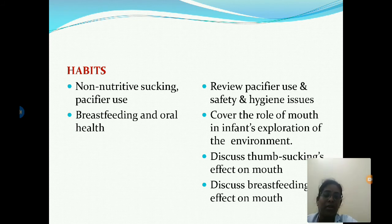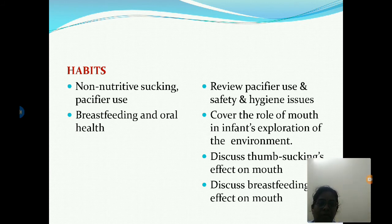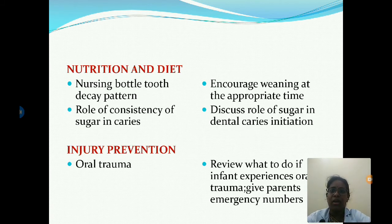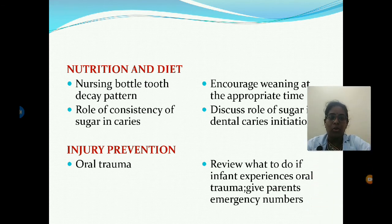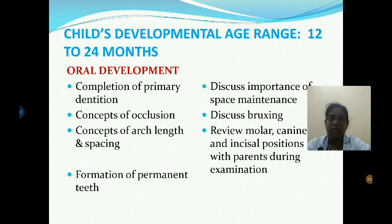For habits at six to twelve months, non-nutritive sucking habits and proper use of pacifiers and breastfeeding should be examined, covering pacifier use safety, the role of the mouth in infant exploration, thumb sucking effects, and breastfeeding effects on the mouth. For nutrition and diet, topics include nursing bottle decay pattern, role of sugar consistency in caries, encouraging weaning at appropriate time, and the role of sugar in dental caries. For injury prevention, oral trauma management should be reviewed and parents given emergency contact numbers.